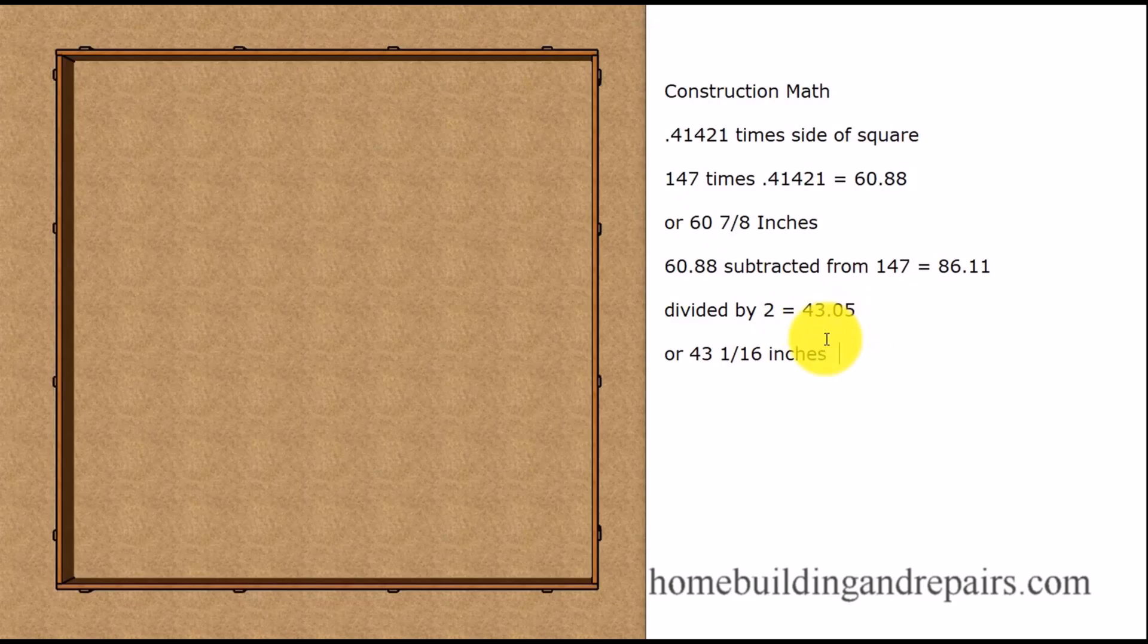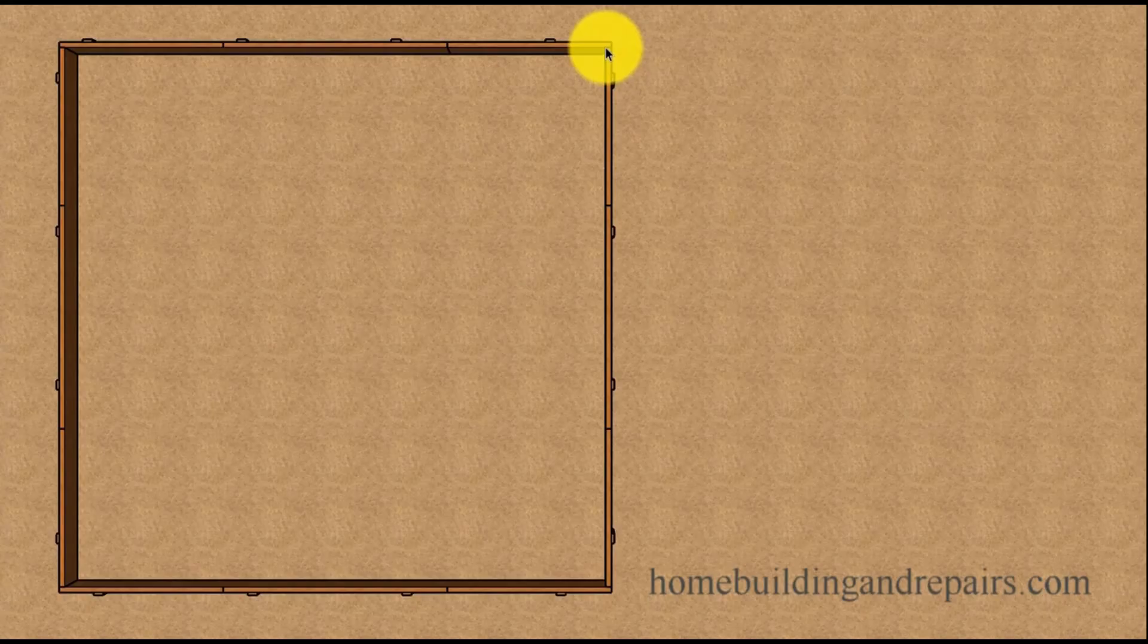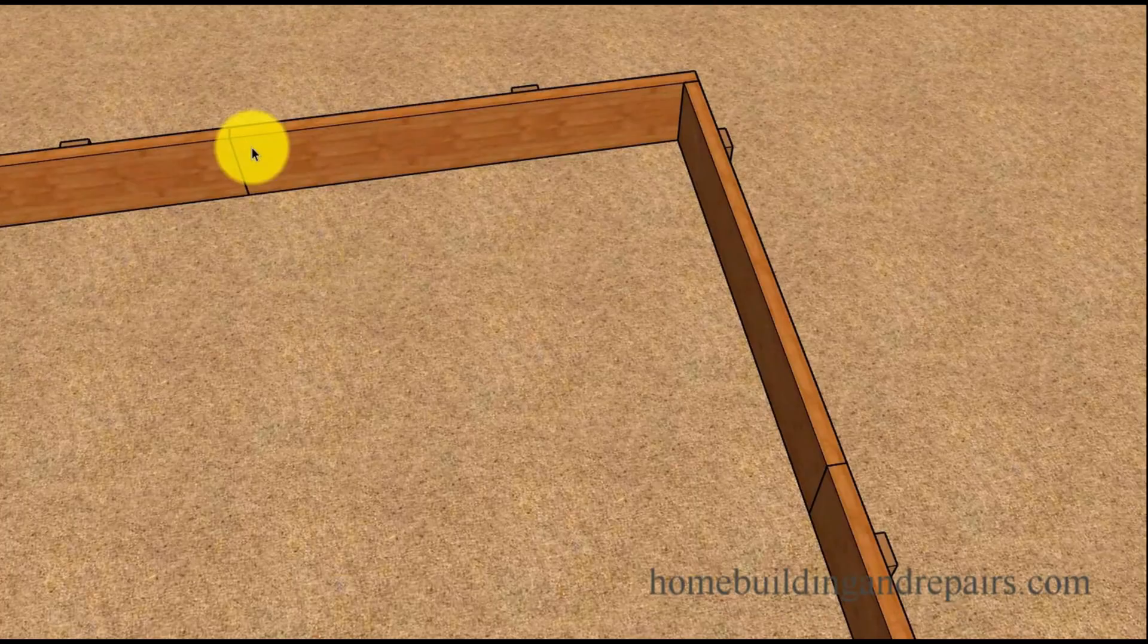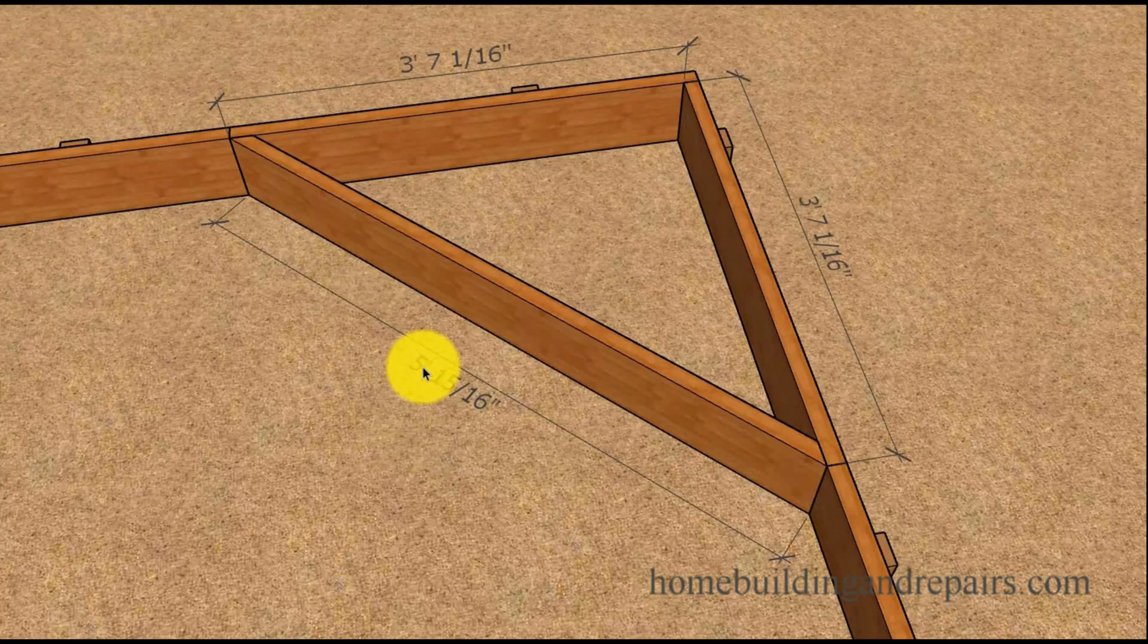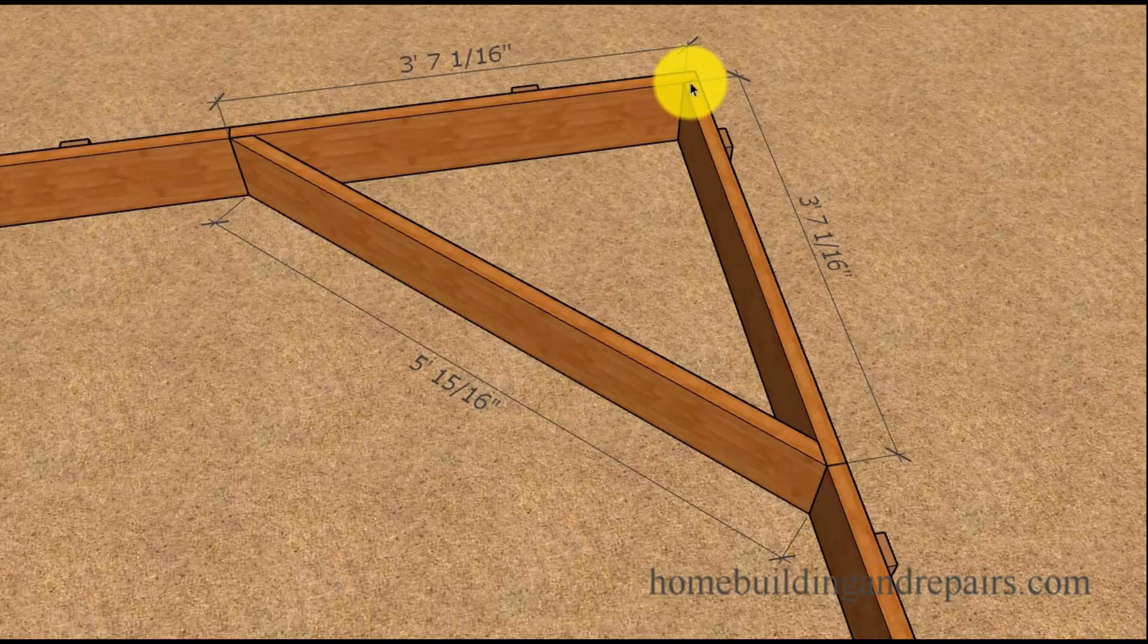Here's what I did: 147 subtracted from, or 60.88 subtracted from 147 equals 86.11. I'm going to divide that by two so that's going to give me two side measurements here, and that comes to 43.05, that's close enough to 43 and a 16th of an inch. Next up you will simply take the 43 and a 16th of an inch and measure it. Remember you're measuring from the inside to the mark and you're going to simply mark it at every corner, come off of each corner and mark it.